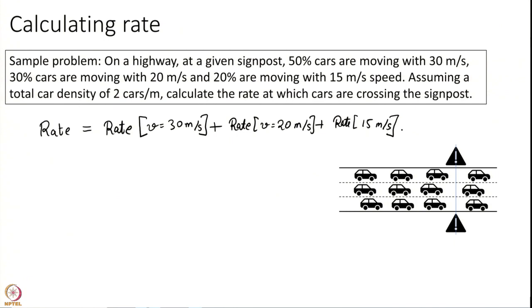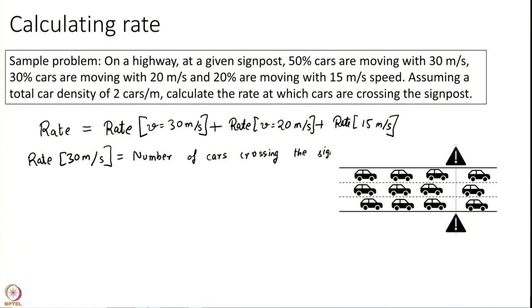So I will find these three individual rates. Let us focus on the rate at 30 meters per second. What is rate? We have to get back to our fundamentals. Rate is the number of cars crossing the signpost per second. So if I wait for 1 second, I have to observe how many cars passed that were traveling at 30 meters per second. Imagine you are sitting at that toll booth — every time a car traveling at 30 meters per second crosses by, you increment a counter. The count after 1 second is the rate by definition.